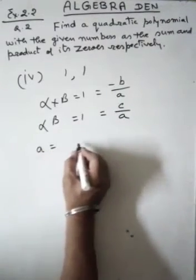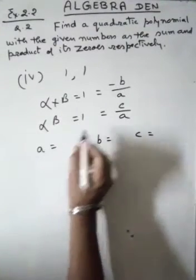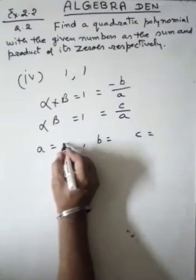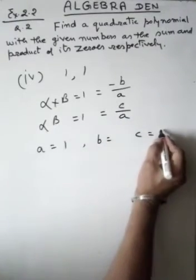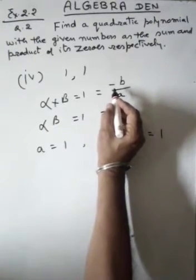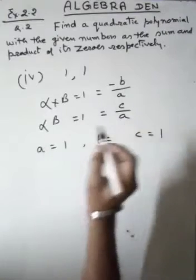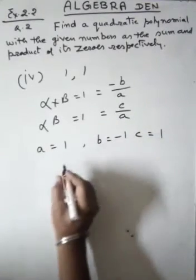Now when we analyze the values, we see that a is 1, c is also 1, and as b must be in the form of minus b upon a, therefore b value has to be minus 1.